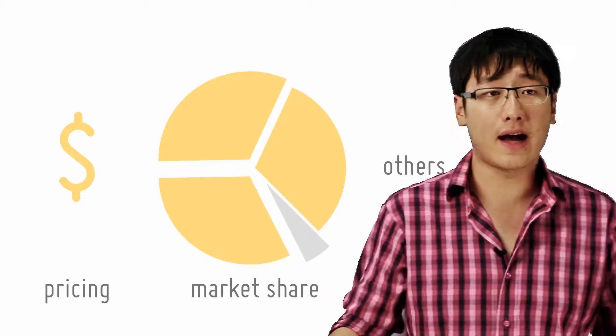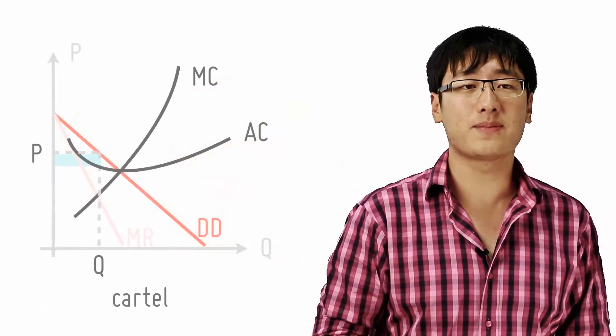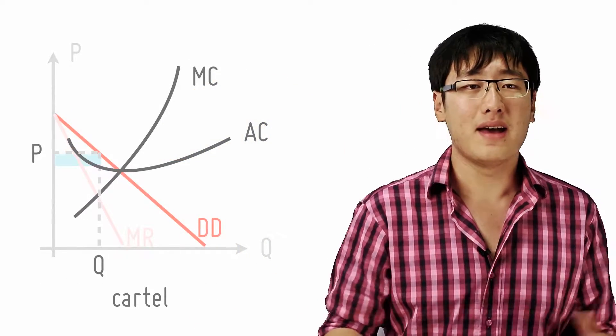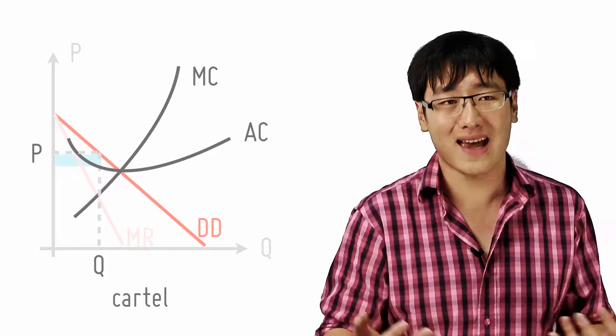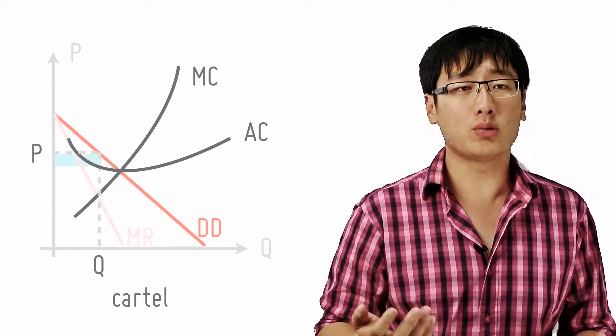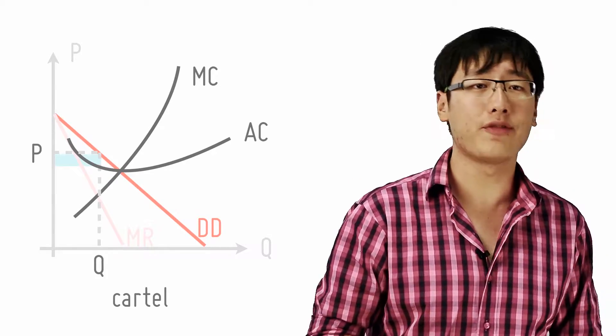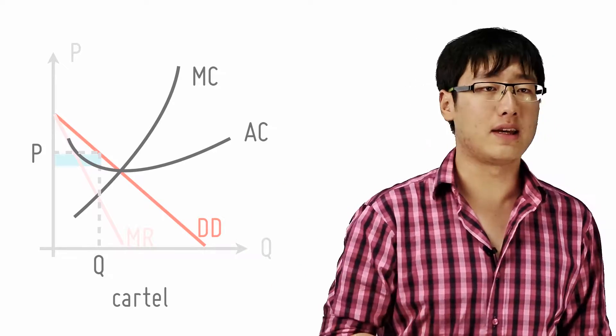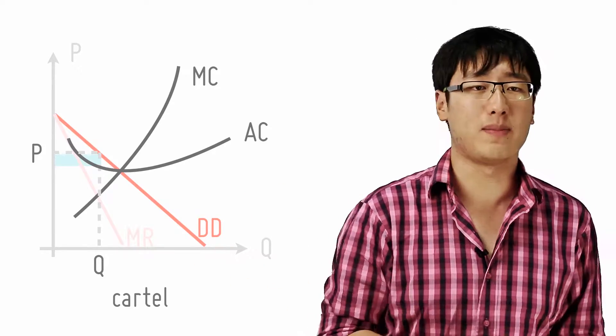A formal collusion is called a cartel. The cartel will maximize profits as if it's a monopoly. In that case, we can analyze it exactly like a monopoly. The total market demand curve becomes the collective market demand of the firms. The MC curve is the horizontal sum of the MC curves of its members.